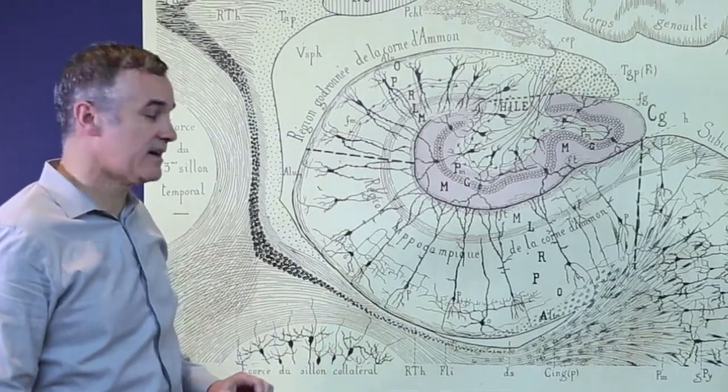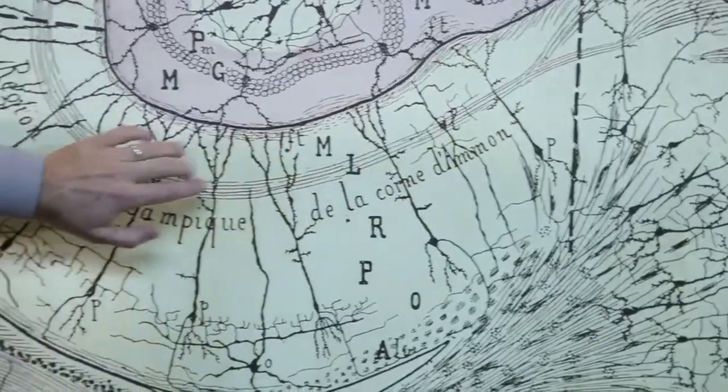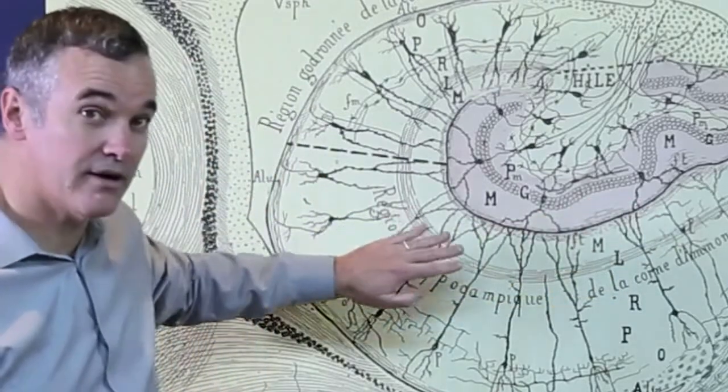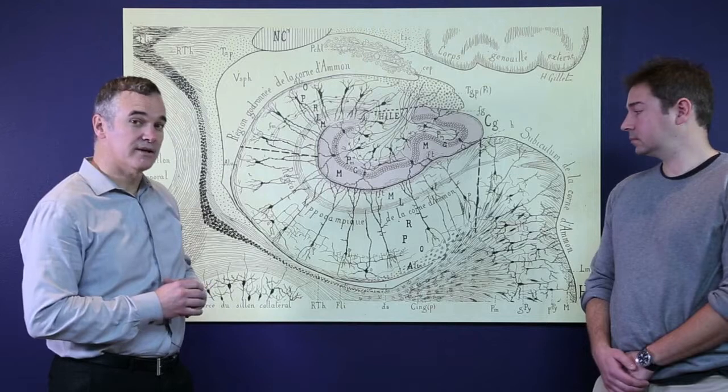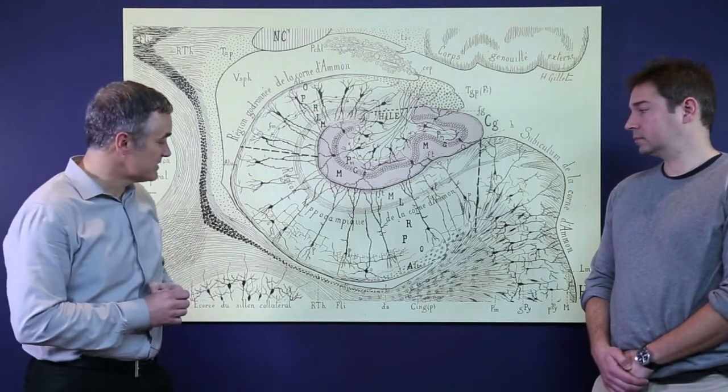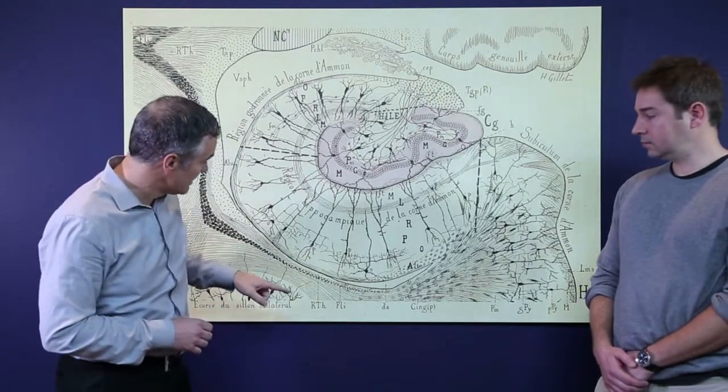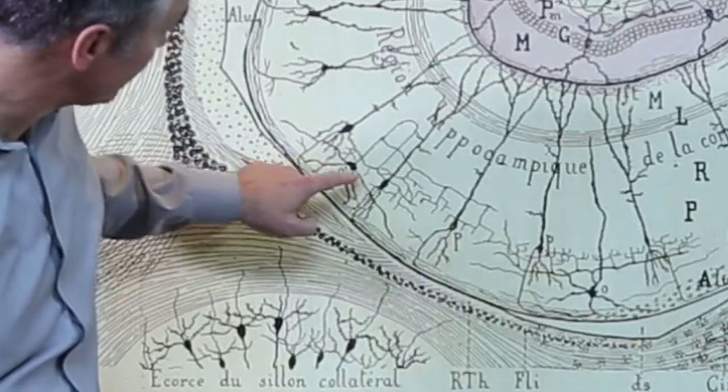There is a second excitatory projection that comes from the entorhinal cortex via the perforant path, and you can see that this pathway is restricted to the more distal part of the apical dendritic tree. Now there's an additional element to the integration of synaptic inputs in these neurons, which is that there is a whole host of inhibitory interneurons. Cajal has drawn a couple of them in here. Here's one over here, for example.